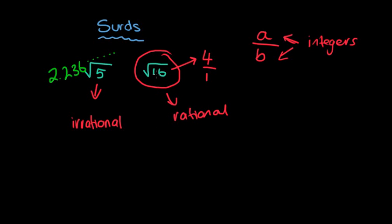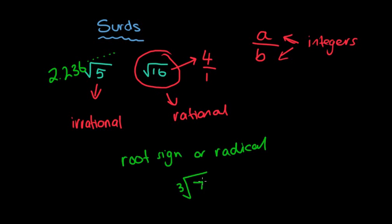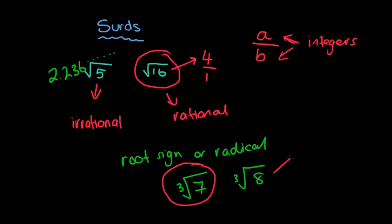A SIRD involves having a number with a root sign, also called a radical — for example, the cube root of 7. Of those two numbers, you can recognize the cube root of 8 is not a SIRD, because the cube root of 8 equals 2, which can be written as 2 over 1. So a SIRD is simply a number written with a radical sign that can't be simplified to a nice whole number like 4 or 2.